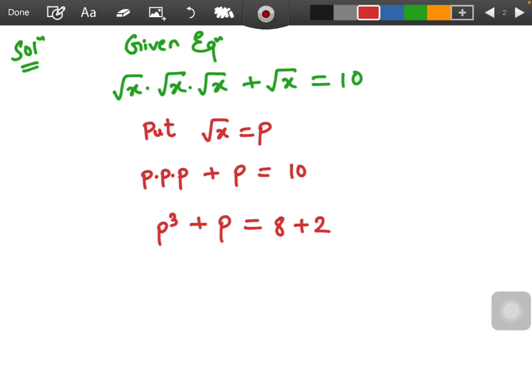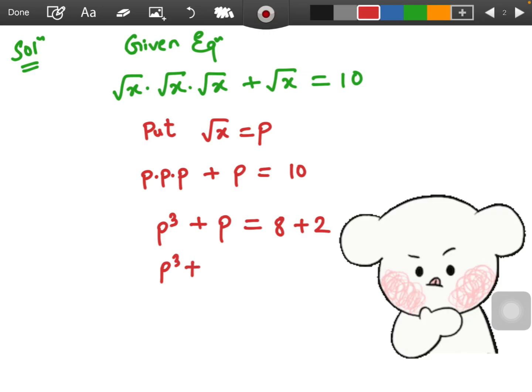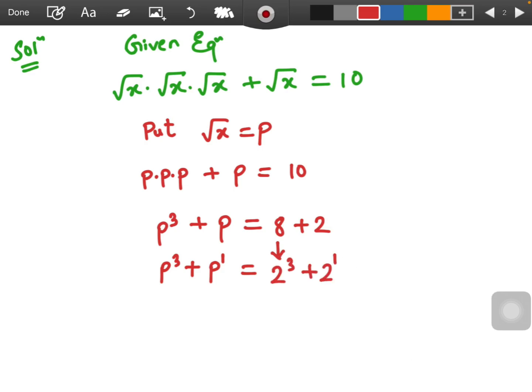But why I am choosing only 8 plus 2? So there is a logic that if I am seeing here cube of p and there is power of p is 1. So here I can see that I can write this 8 as 2 cube and this is 2 to the power 1. So somewhere there is some similarity in the format of p and 2. So that is why we have converted 10 into 8 and 2.